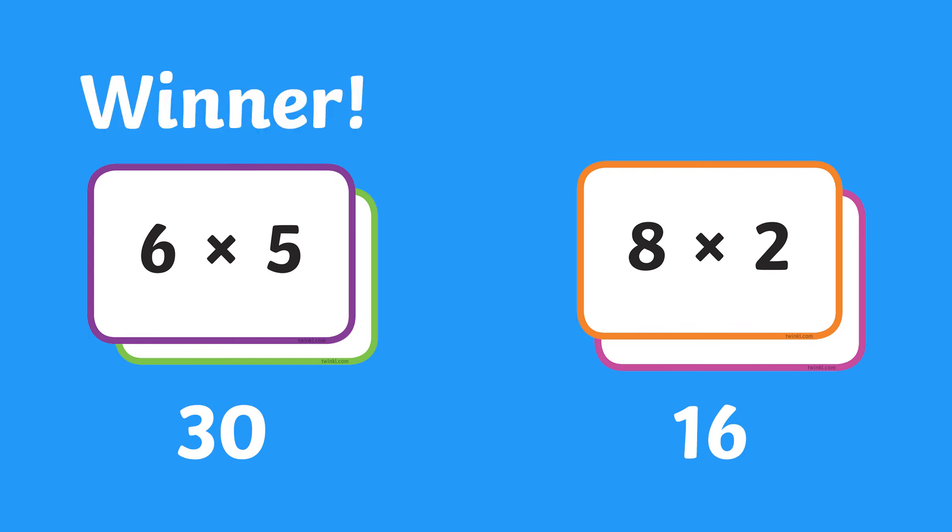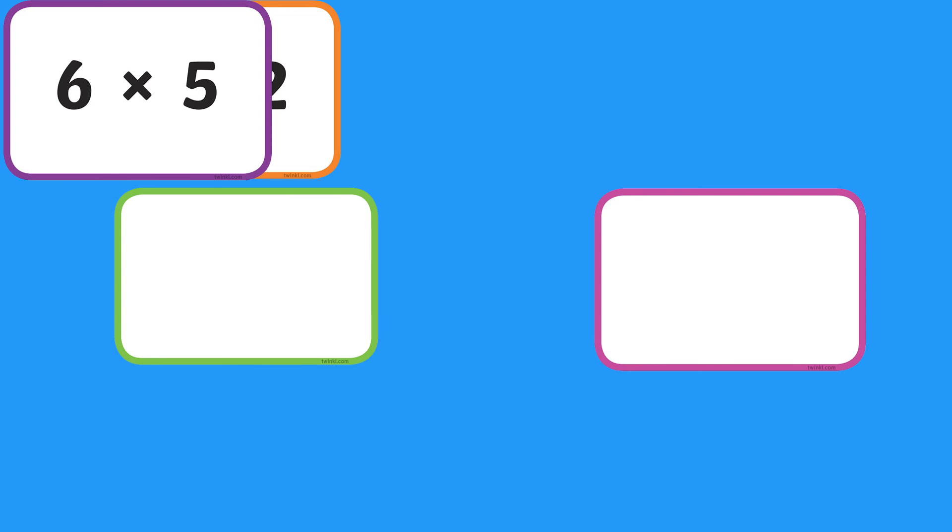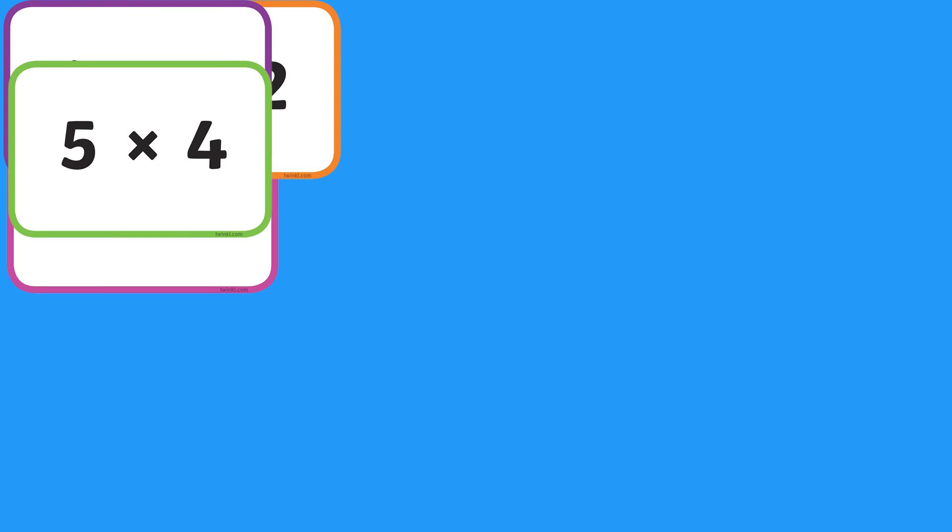Shuffle the deck of flashcards once again and deal out the flashcards between two players. Each player plays the top card in their deck and solves the sum. Who had the greater number? The player with the biggest number collects both cards. Continue until the players use up all their cards. The player who won the most flashcards wins the game.